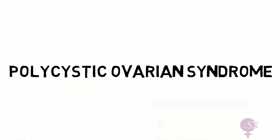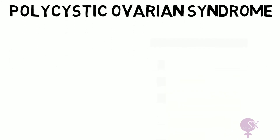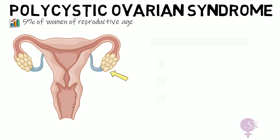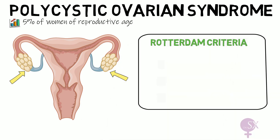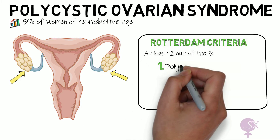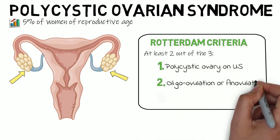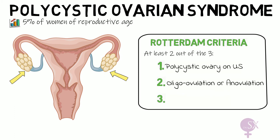Polycystic ovarian syndrome, PCOS, is a common condition affecting five percent of women of reproductive age. The syndrome gets its name due to the common sign of multiple ovarian cysts on ultrasound — hence 'polycystic.' However, in PCOS a patient does not necessarily have to have polycystic ovaries. PCOS is diagnosed by means of the Rotterdam criteria: one must have two out of the following three criteria: polycystic ovaries on ultrasound, oligovulation or anovulation, and hyperandrogenism.